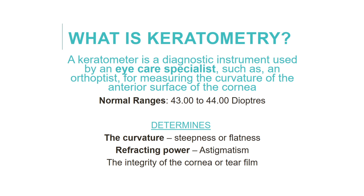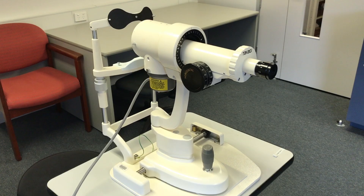Keratometry is the measurement of the anterior corneal curvature. This also determines the power of the cornea. Differences in power across the cornea in both the horizontal and vertical meridians can result in astigmatism. A keratometer can also examine the integrity of the cornea or tear film.